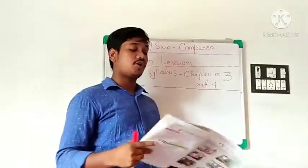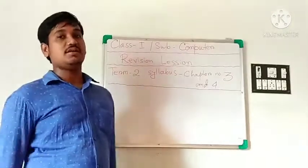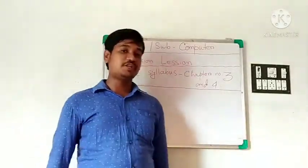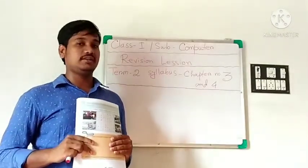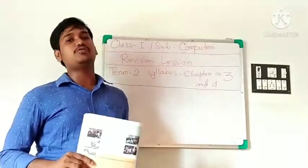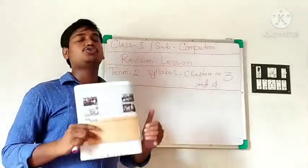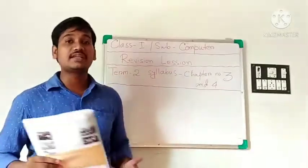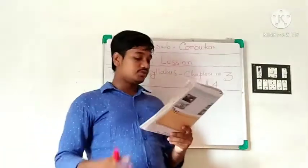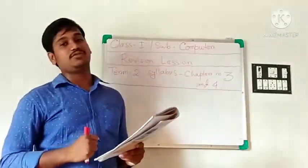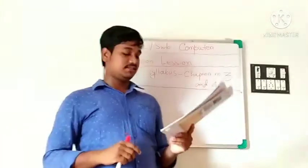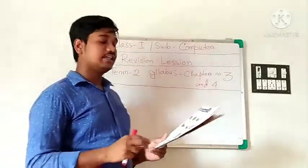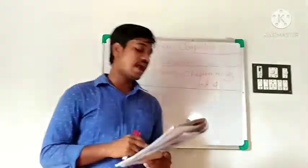Next, go to chapter four: parts of a computer. We have many parts of our body; similarly, computers also have many parts like monitor, CPU, mouse, and keyboard. A computer has four main parts: monitor, keyboard, mouse, and CPU.